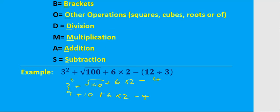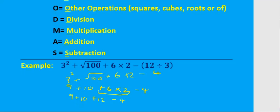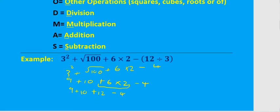Other operations are done. There's no division, but there is multiplication. Keeping everything else the same, we multiply 6 by 2 to get 12, giving us 12 minus 4. Next is addition: 9 plus 10 is 19.